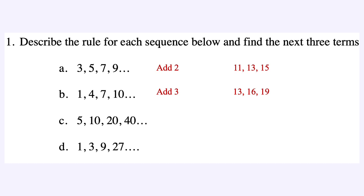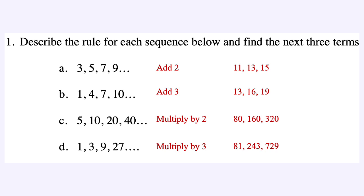Q1C: 5, 10, 20, 40 — we're multiplying by 2 each time. So 40 times 2 is 80, 80 times 2 is 160, and 160 times 2 is 320. That is geometric. Q1D: 1, 3, 9, 27 — we're multiplying by 3 each time. So 27 times 3 is 81, 81 times 3 is 243, and 243 times 3 is 729. Also geometric.